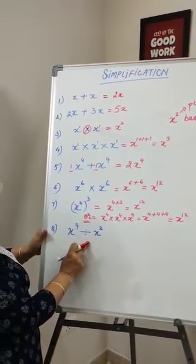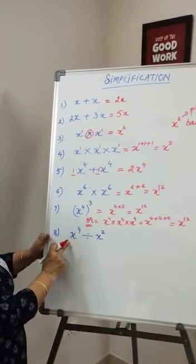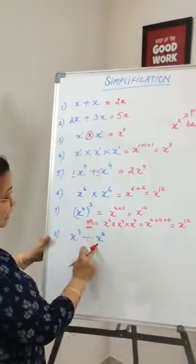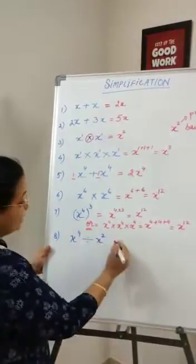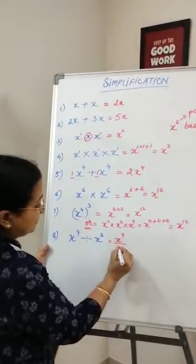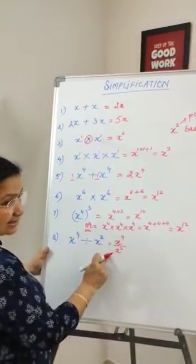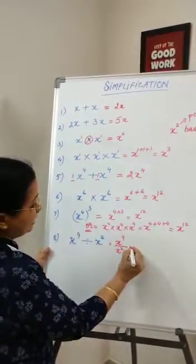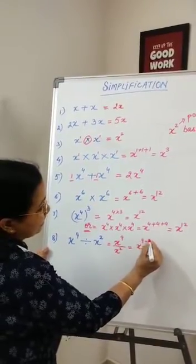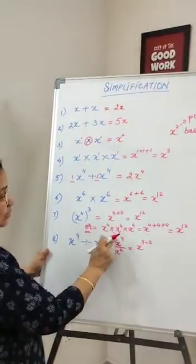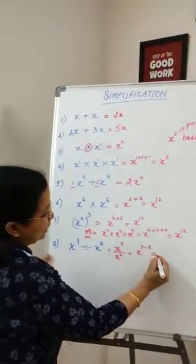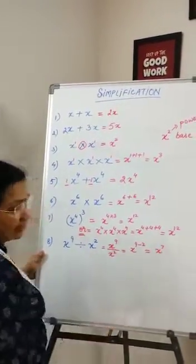When we have a division question, we divide: x power 9 divided by x squared — both bases are the same, so the powers are subtracted. x power 9 minus 2, so the answer is x power 7.